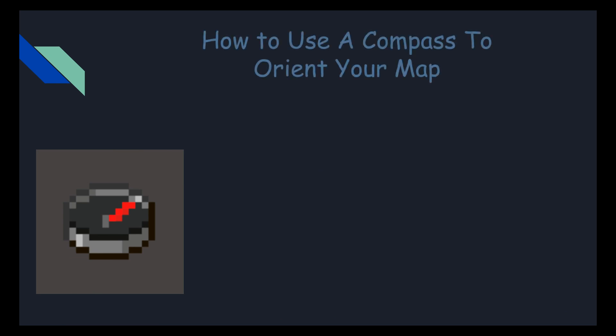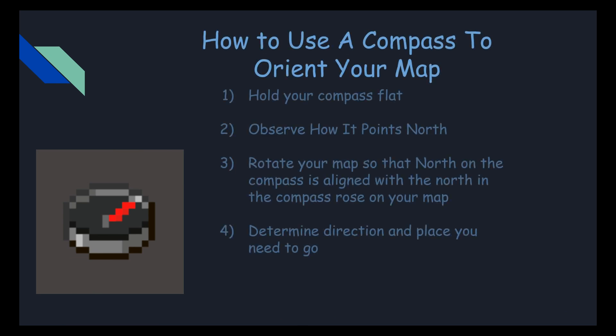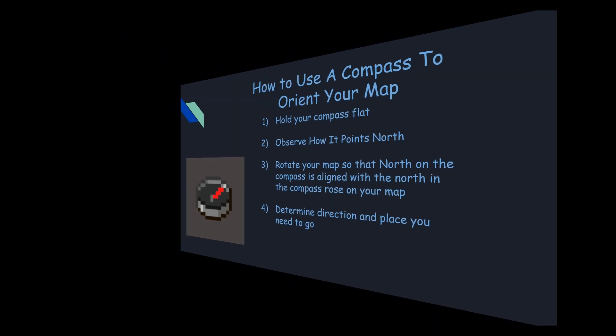How to use a compass to orient your map. Hold your compass flat and observe how it is pointing north. Rotate your map so that the north on the compass is aligned with the north on your map. Then determine the direction and place you want to go.